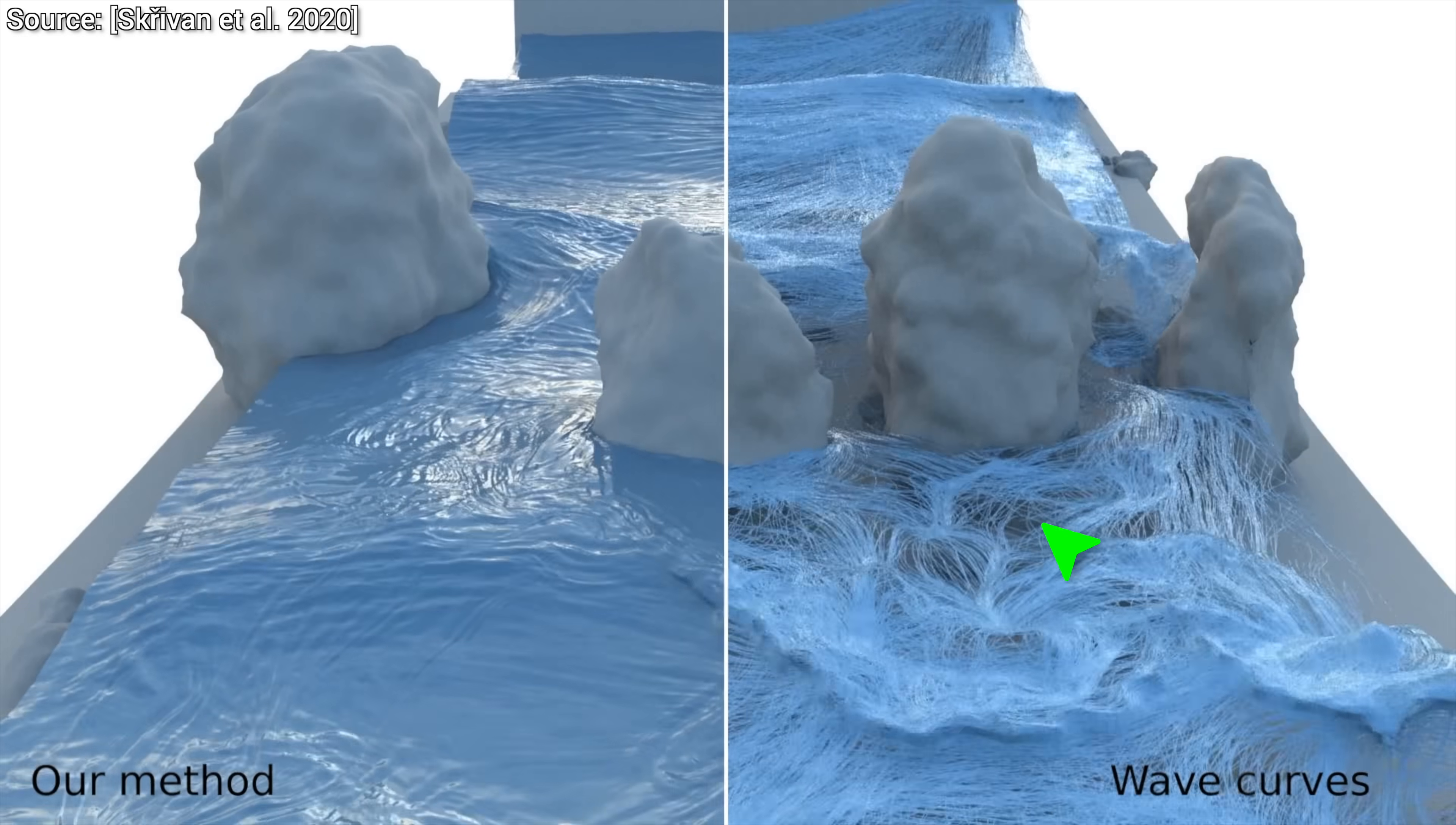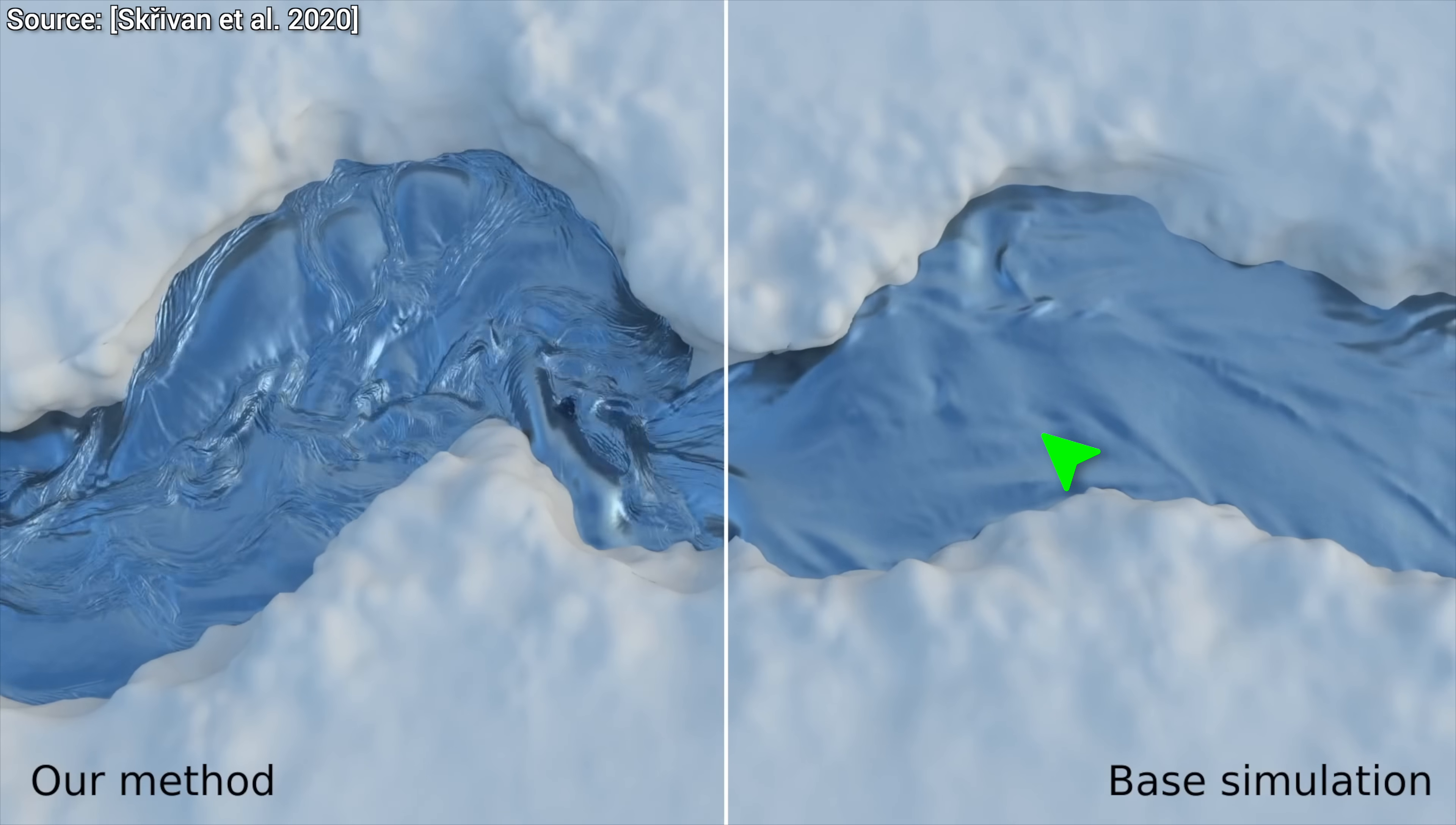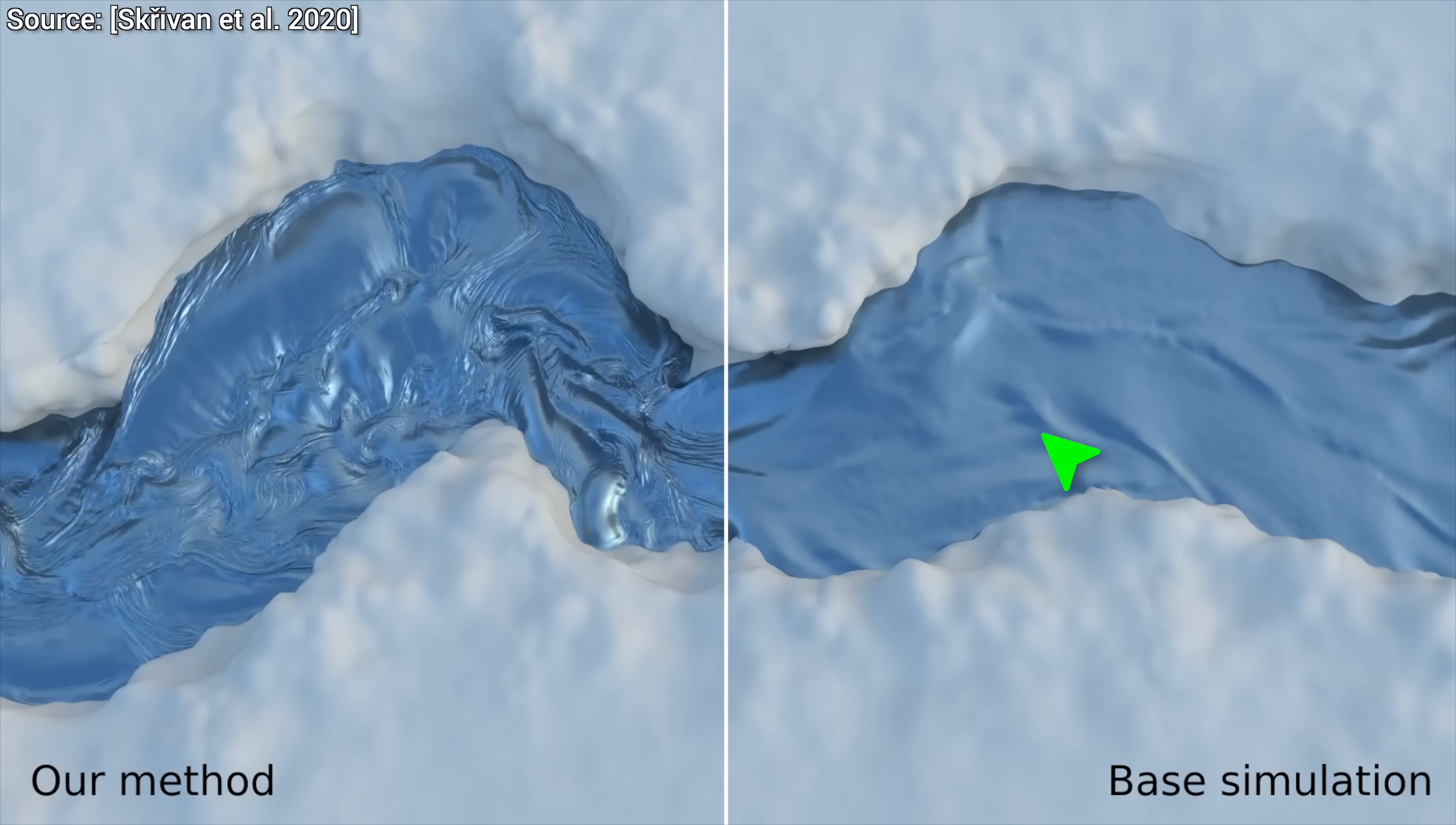And it gets even better, because these wave curves can be applied as a simple post-processing step. What this means is that the workflow that you saw here really works like that. When we have a coarse simulation that is already done, and we are not happy with it, with many other existing methods, it is time to simulate the whole thing again from scratch, but not here.